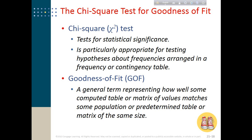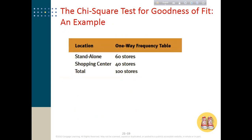In the univariate chi-square test, we basically test whether a frequency distribution is different from an expected frequency. That means we have an observed frequency and we test whether this observed frequency is different from an expected frequency.